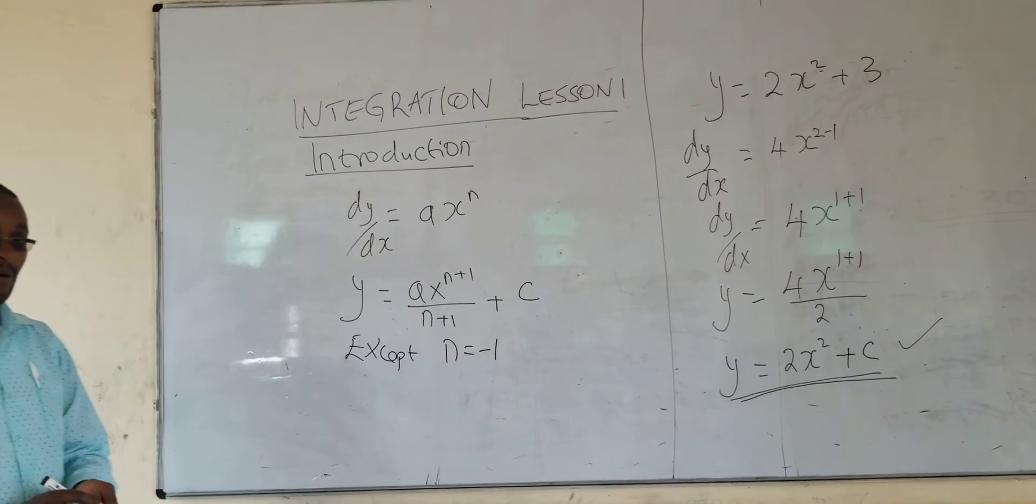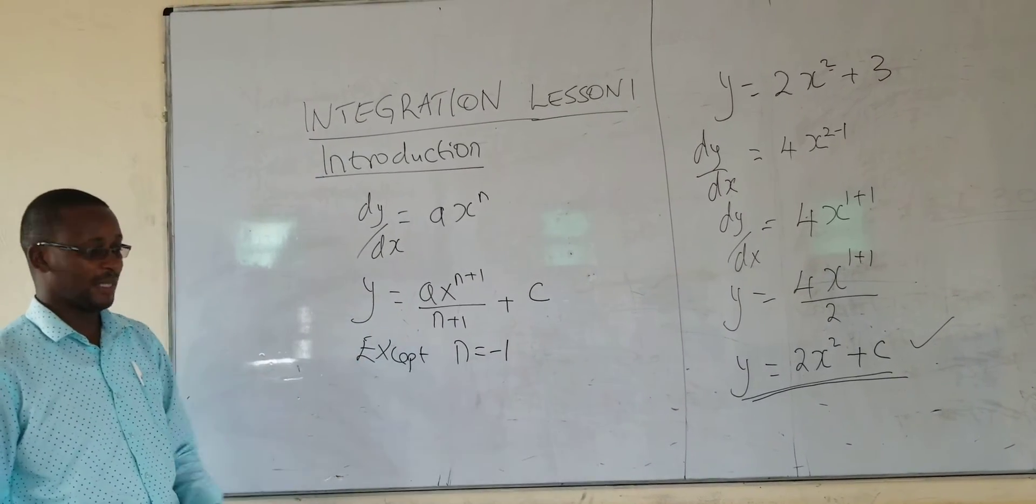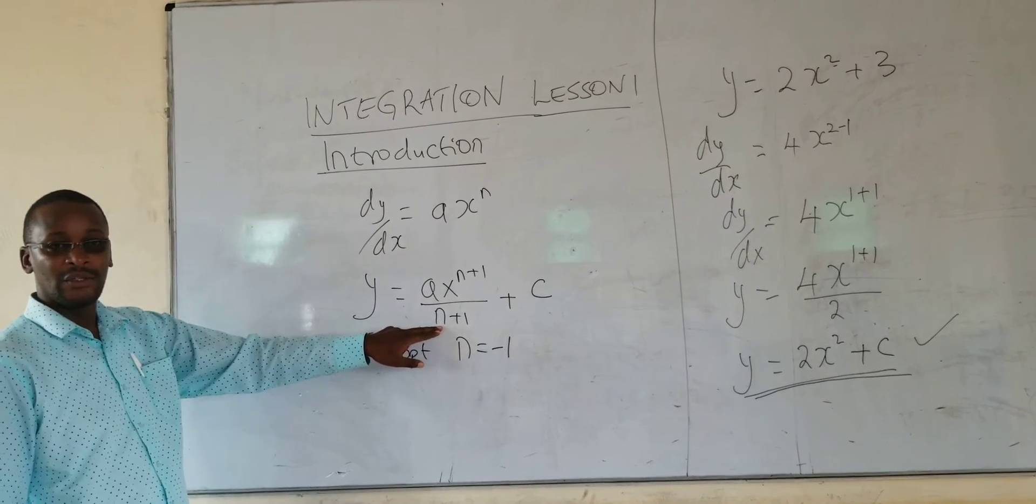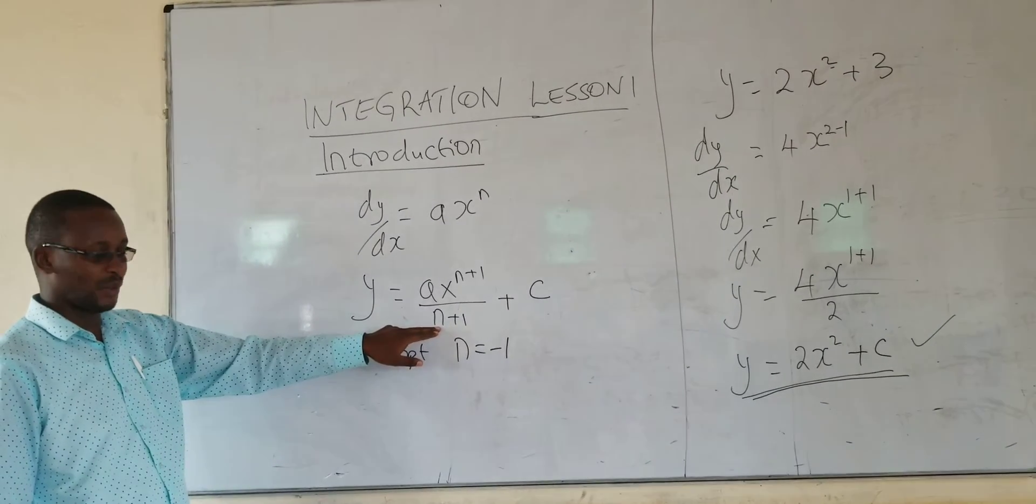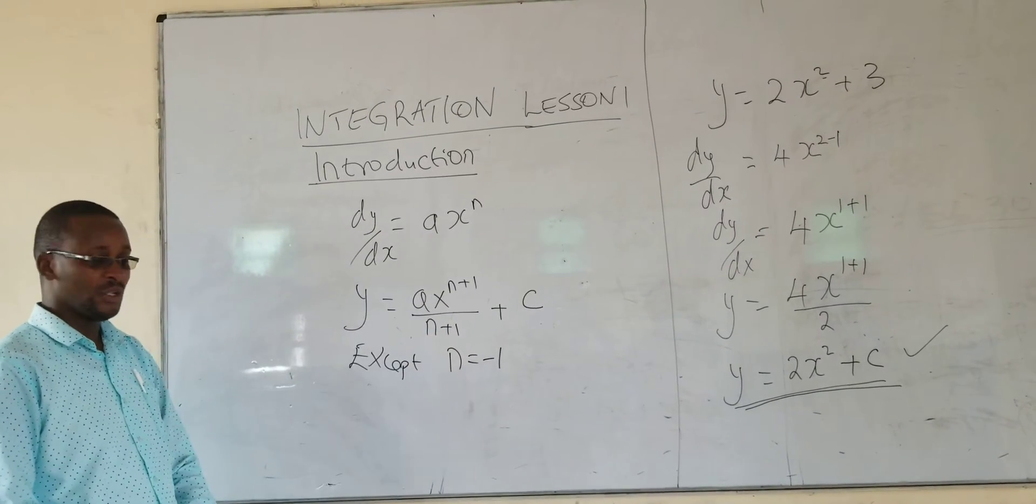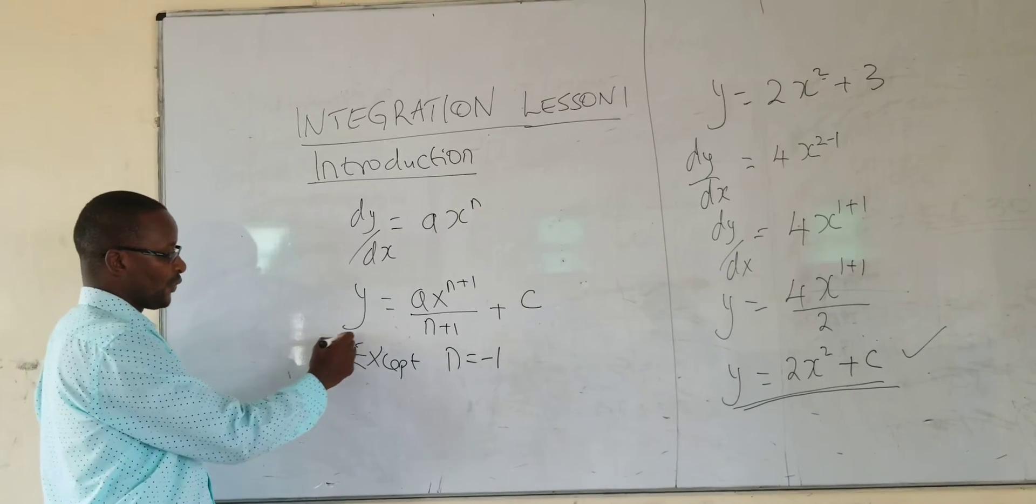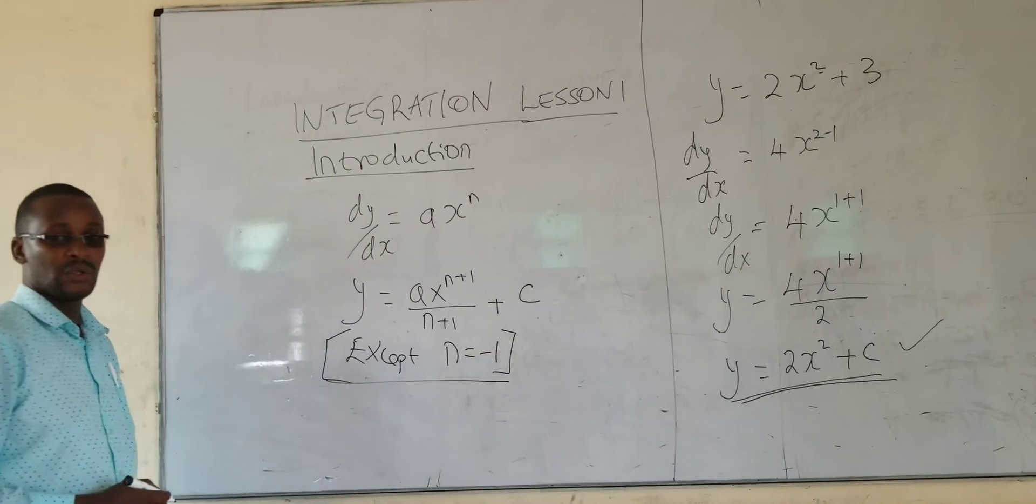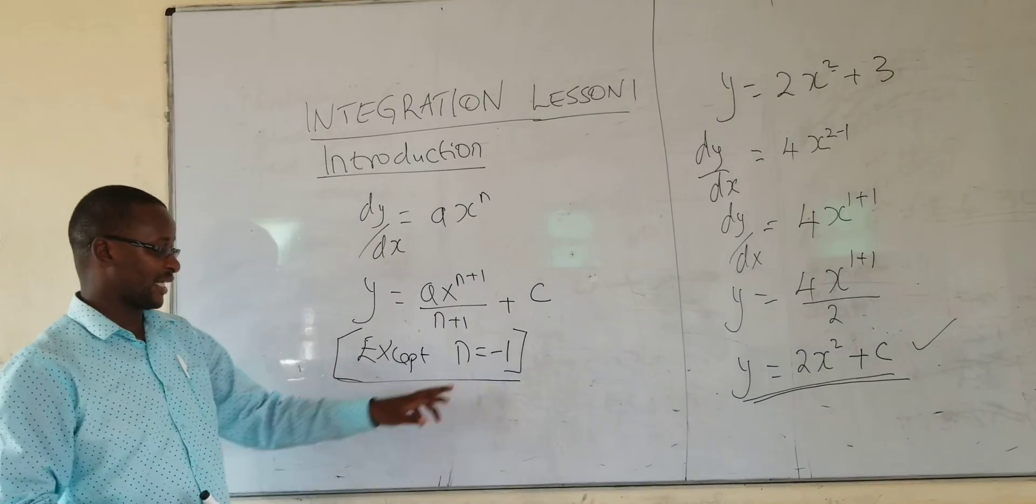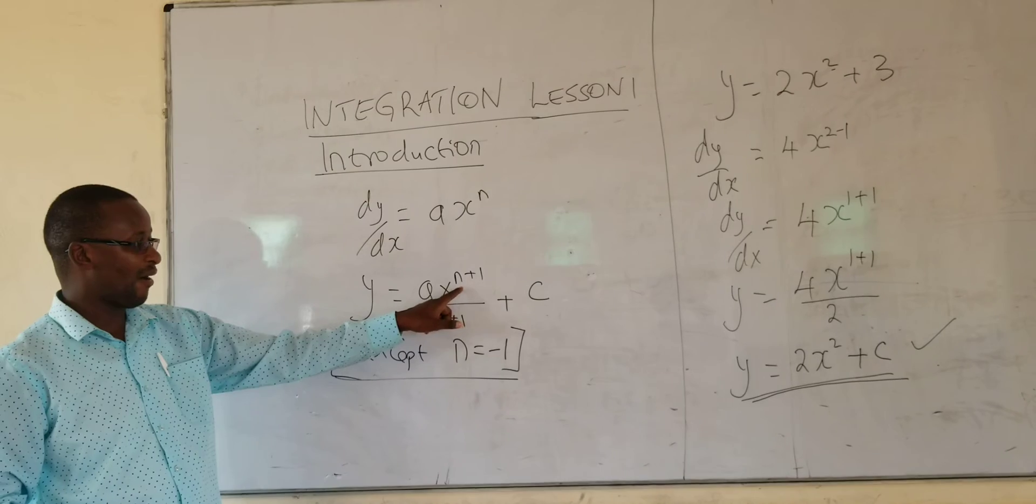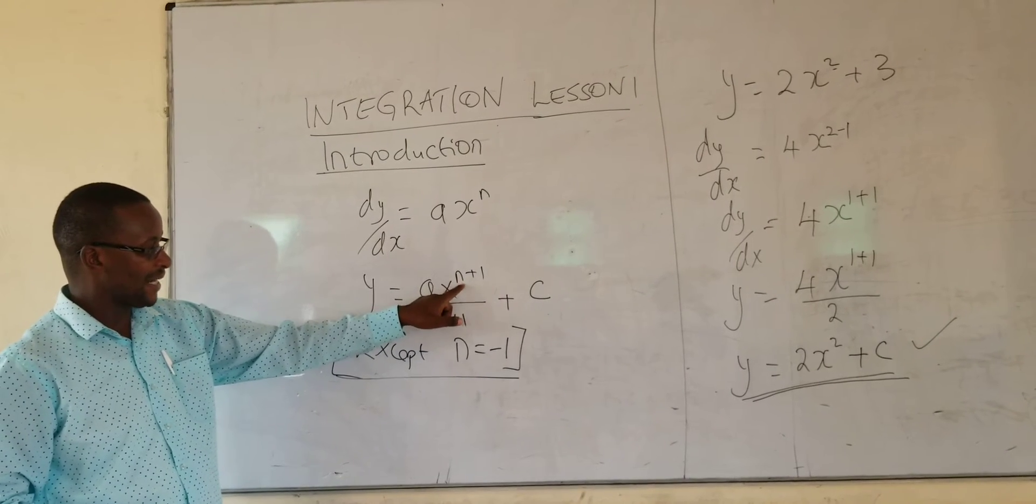The reason why we normally accept this n is equals to minus 1, when you put n is equals to minus 1 here, you will get the denominator being a 0. And you know, when you divide the number by a 0, you get infinite. So this one, you integrate using a different method, which you are going to learn at a different level, not at this level, how to integrate when the power of x is minus 1.